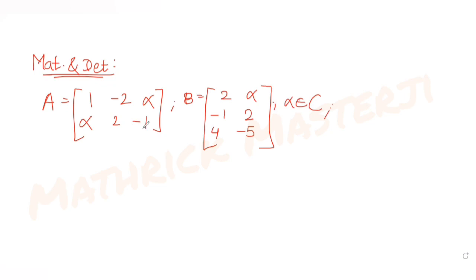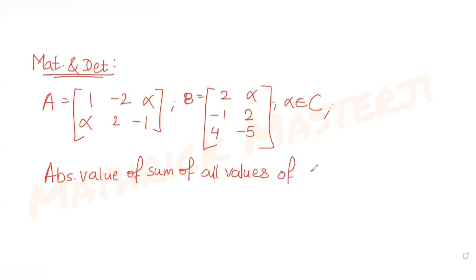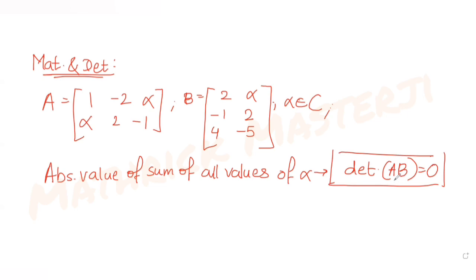The question asks us to find the absolute value of the sum of all values of α, under the condition that the determinant of matrix A·B should be equal to zero. So we have to find all values of α, then find their sum, and then the absolute value of that sum.